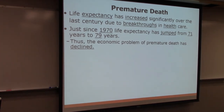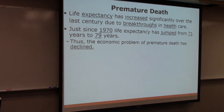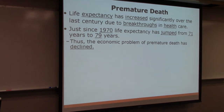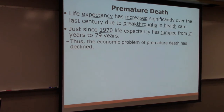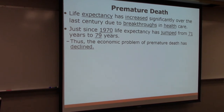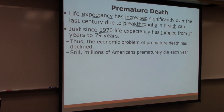Everybody says they know people who are 85, 90, 95, 100 — everybody has a relative who lived to 100. But you also know people who died in high school from car wrecks, or from cancer.